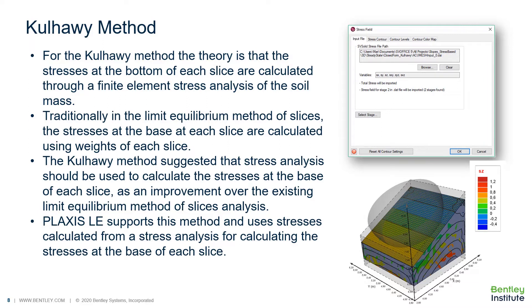The Col-Hallway method is based on the theory that stress analysis by finite element provides a better representation of the stresses at the base — the shear and normal stresses calculated at the base of every slice. In the Col-Hallway method, you would typically perform a turn-on-gravity finite element analysis, take the stresses, pull them into your limit equilibrium software, and use the finite element stresses at the base of every slice. You can do this analysis in Plaxis LE and get a better representation of the stresses in your slope.